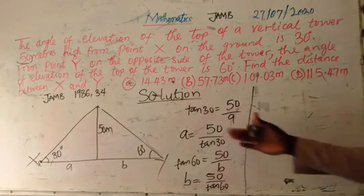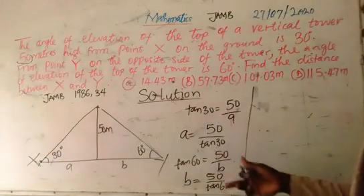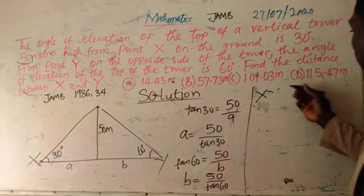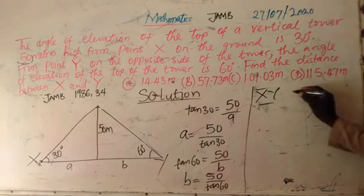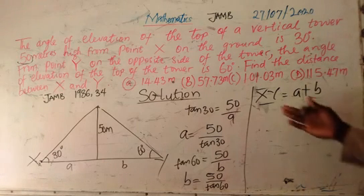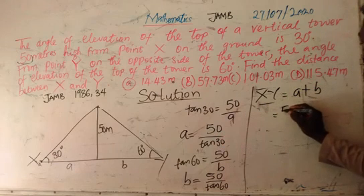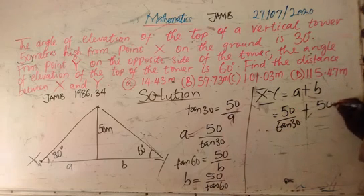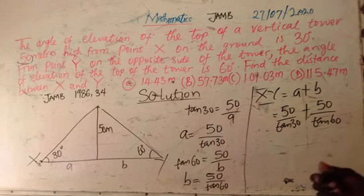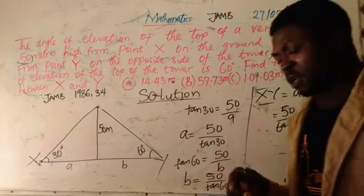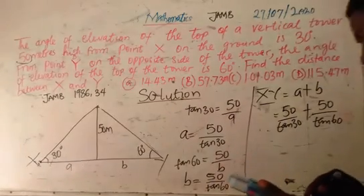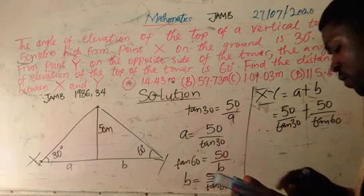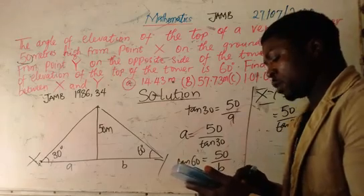To get the length of XY, we simply add a and b. So the distance between X and Y equals a plus b, which is 50 over tan 30 plus 50 over tan 60. You can simply type this on your calculator: 50 divided by tan 30, plus 50 divided by tan 60.